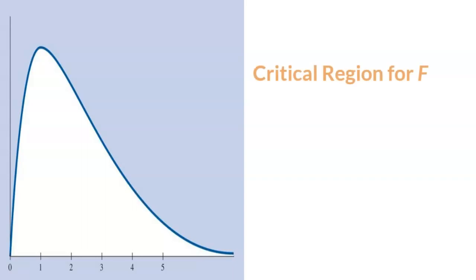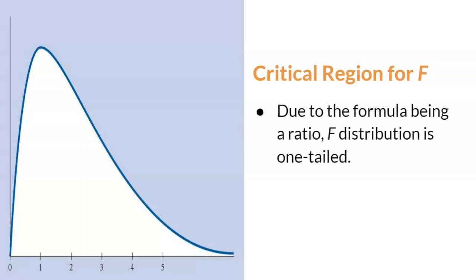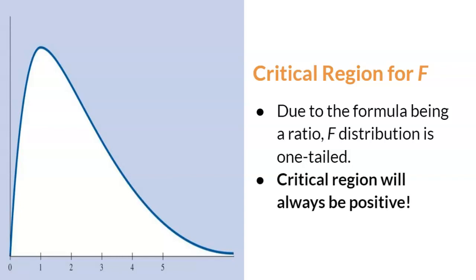Additionally, there's another significant change to the critical region for a one-way ANOVA. Recall that ratio is a fancy way of saying fraction, and the formula for the F-ratio is actually a fraction. Fractions can never be negative. Therefore, an F distribution is always one-tailed, and the critical region will always be positive. The number one mistake students make is writing a critical region of plus or minus F when it can only be a critical region of plus F.